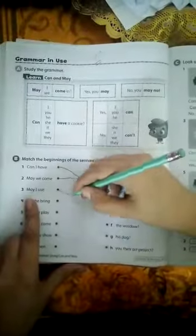We want to answer three. May I use? We want to answer letter E. Your phone. Can he prank? Letter G. His dog. May we play? Letter A. A game on the internet.